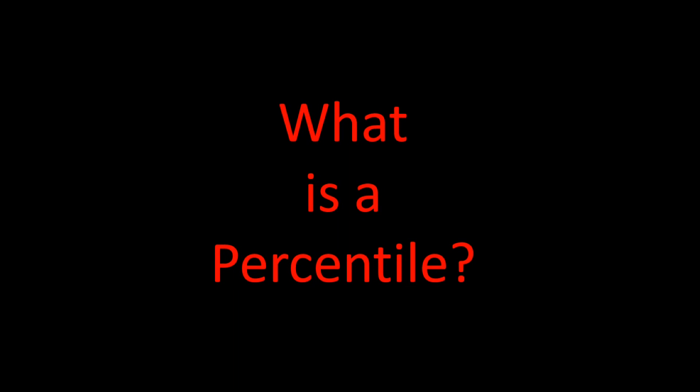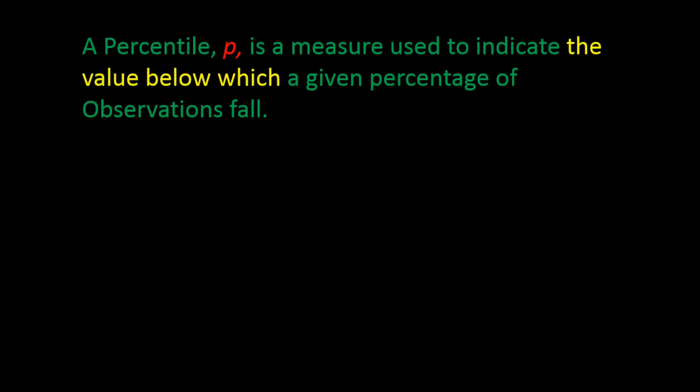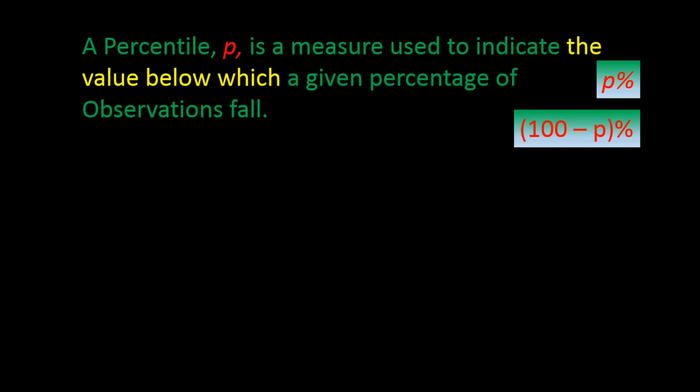Hello everyone. Welcome to this tutorial on percentiles and quartiles. What is a percentile? Formally speaking, the definition of a percentile is a measure used to indicate the value below which a given percentage of observations fall. Let's call this P or P percent. The values above this number would then be 100 minus P, or 100 minus P percent.